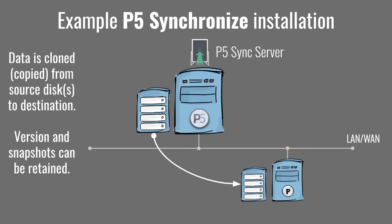For Synchronize — the replication and cloning product — the diagram shows a P5 sync server at the top and a client at the bottom, replicating data from live production storage to a copy across a wide area network, potentially at another location. You could have a more complex topology with satellite offices replicating back to a central office, and you could combine that with backup to have two separate backups.